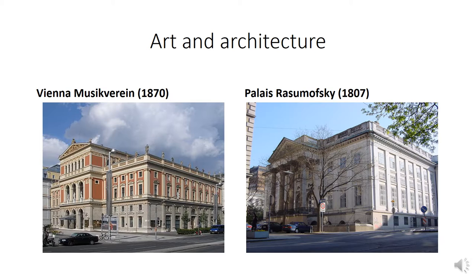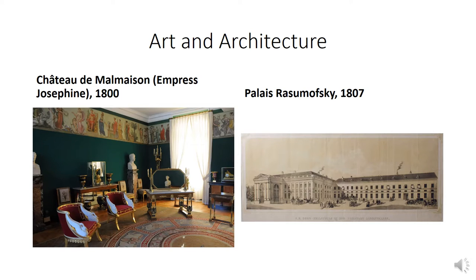By contrast, let us look at two exteriors of buildings in the later neoclassical style, intended as a return to the ideals of the ancients. On the right, the Palais Razumovsky, completed in 1807 for the dedicatee of Beethoven's Op. 59 — Count Razumovsky himself was an amateur violinist. On the left, a somewhat later building, Vienna's Musikverein, built in the same neoclassical style. Here we see formal balance and symmetry, much more restrained decoration, and a shift from exuberant dramatic curves and flourishes toward straight lines and simplicity. An image from the interior of the French Château de Malmaison, dating from around 1800, makes the debt to the ancient world abundantly clear. These trends in visual art and architecture will have analogues in the prevailing musical style of the period, as we will discuss in Module 3.